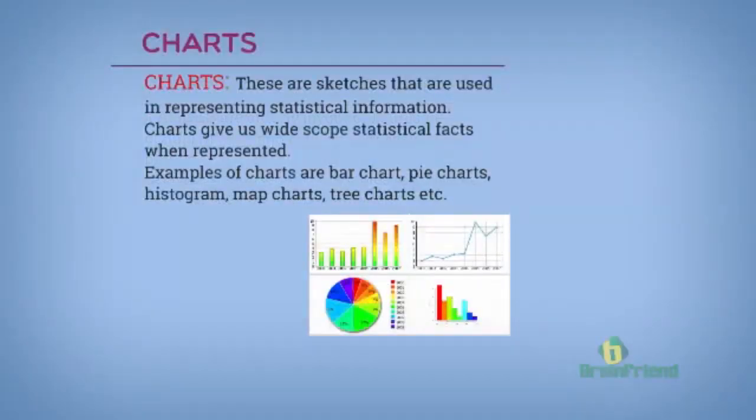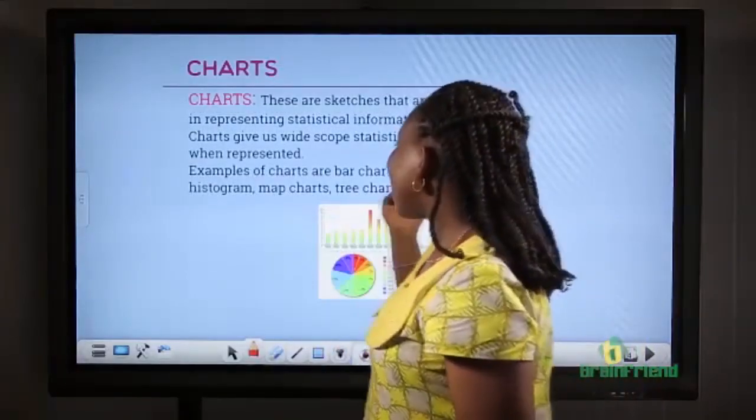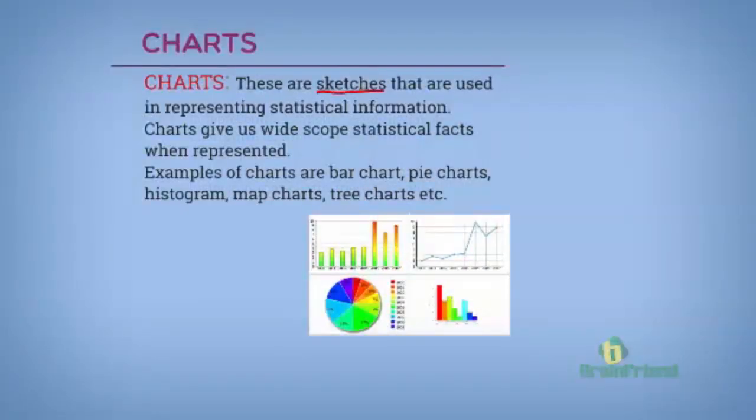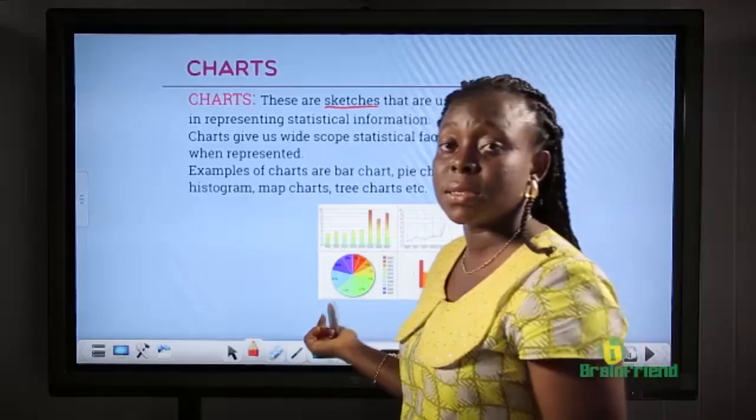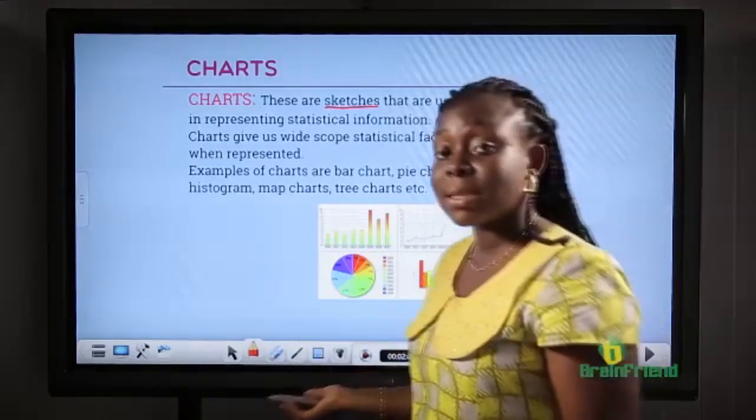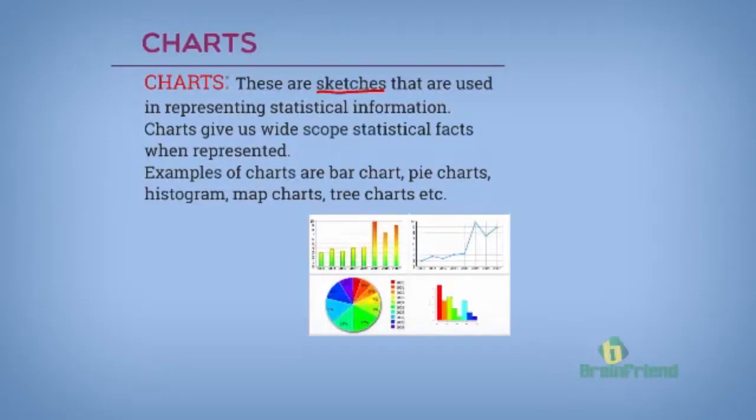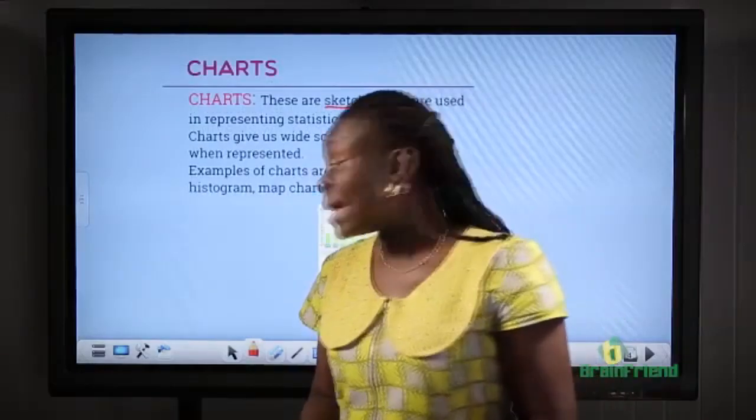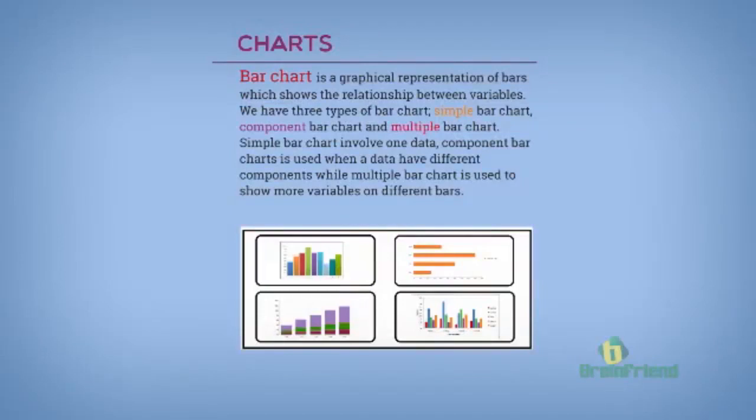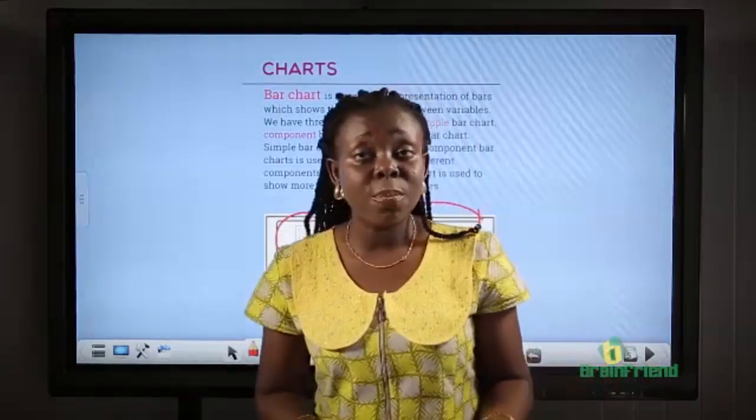Another group of tools are charts. And charts are simply sketches that we use for economic analysis. An example of charts are bar charts, pie charts, map graphs, as the case may be. Quickly we'll be looking at the different types of charts and one of it is a bar chart. Bar charts could be represented horizontally like this or vertically like this. And we have three basic types of bar charts.